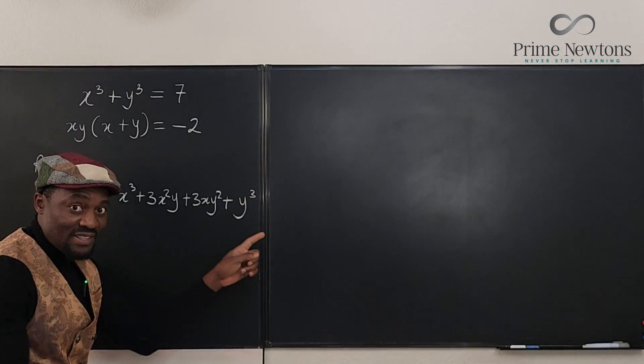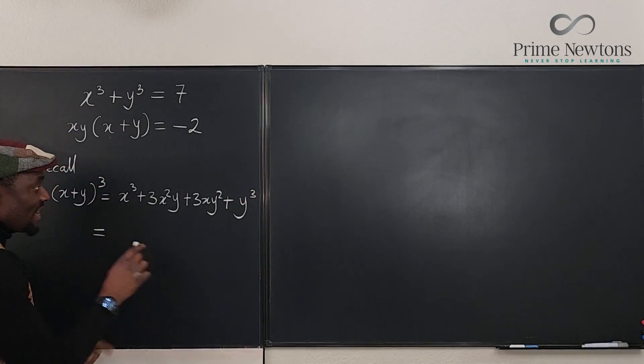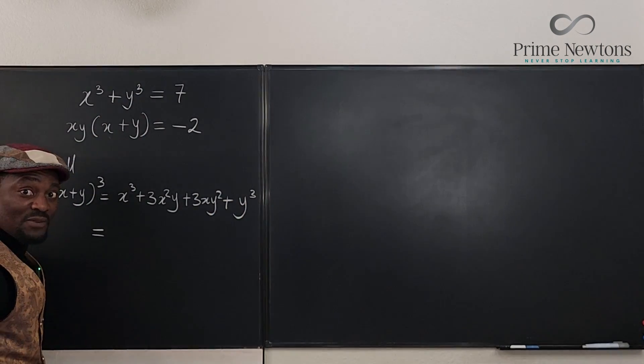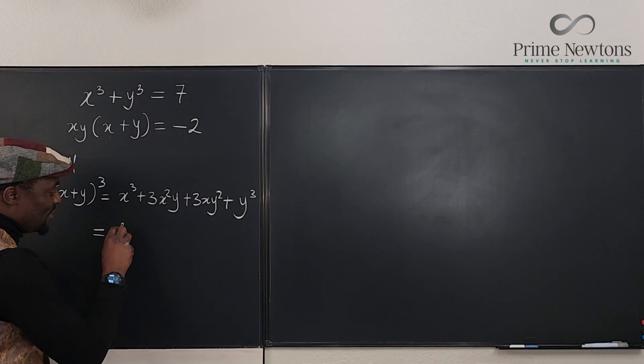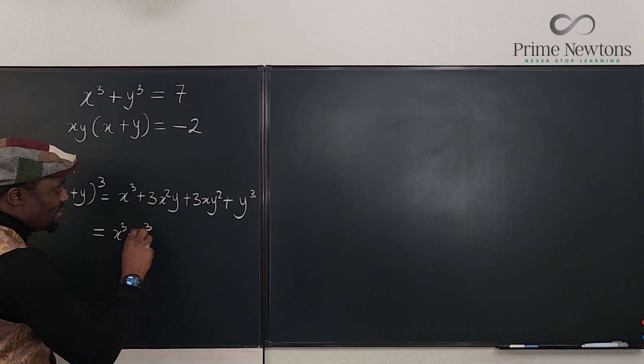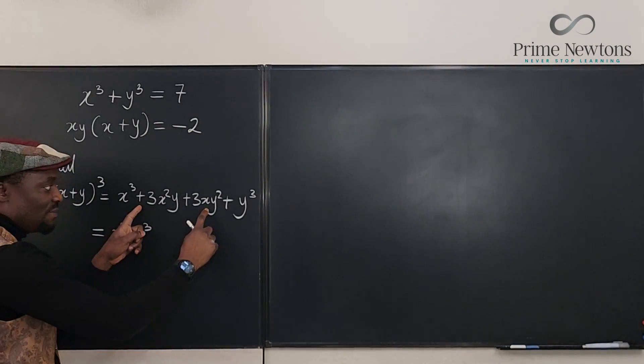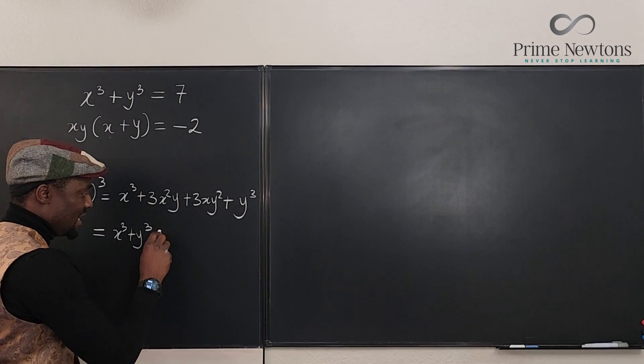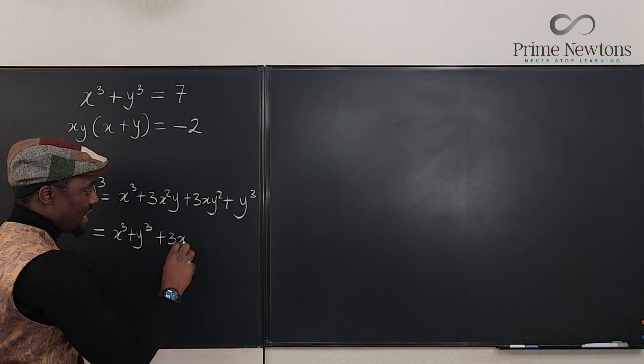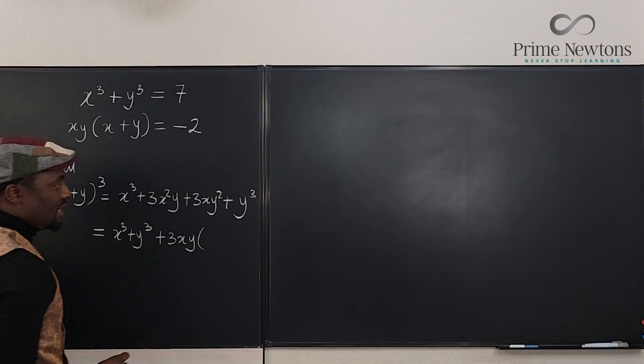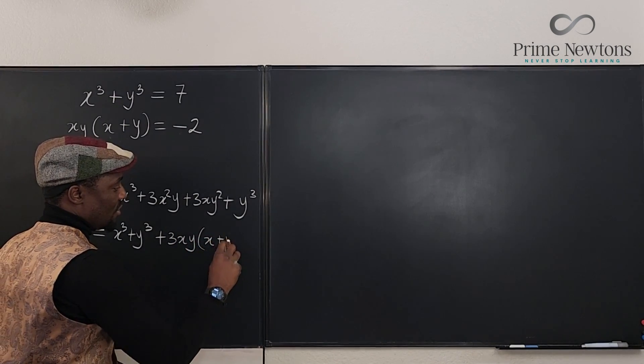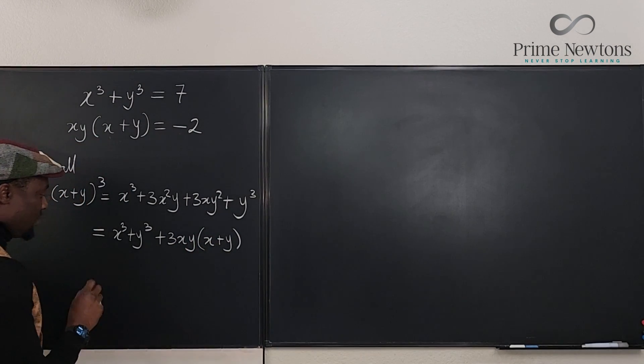Well we can rewrite this by putting x cubed and y cubed together so it looks like the first equation. So you have x cubed plus y cubed done. And then this middle part you can factor out anything that's common. And I can see that this is 3xy times what's left. You have x here, you have y here. And this is what you've got.